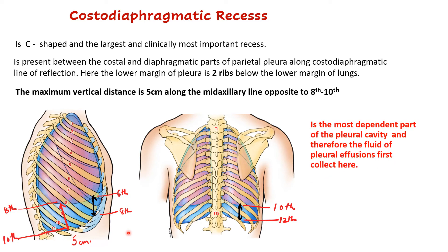This recess is clinically very important because it is the most dependent part of the pleural cavity. When a person is standing, because of gravity, if there is any effusion in the pleural cavity — it could be any kind of fluid or blood — it is going to get collected into the costodiaphragmatic recess. So this is the most dependent part of the pleural cavity and therefore the fluid of pleural effusions first collects here.